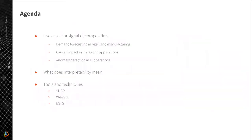In this talk I'll describe techniques and challenges we face in projects related to revenue management and inventory optimization, and other applications of time series forecasting, and how we solve these on real projects. I'll start with several use cases for interpretable forecasting and signal decomposition, using demand forecasting as a running example — focused on retail and manufacturing — and also briefly touching on causal impact analysis in marketing and anomaly detection in IT operations.